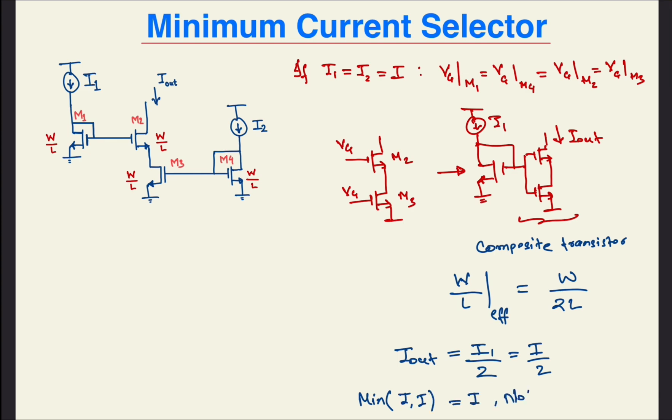So, in my test bench, I fixed I2 and then I swept I1 from a value much smaller than I2 to a value much larger than I2. The resulting plot for Iout looked something like this. It verified our analysis for the extreme cases and we see that there's a smooth transition in the middle.